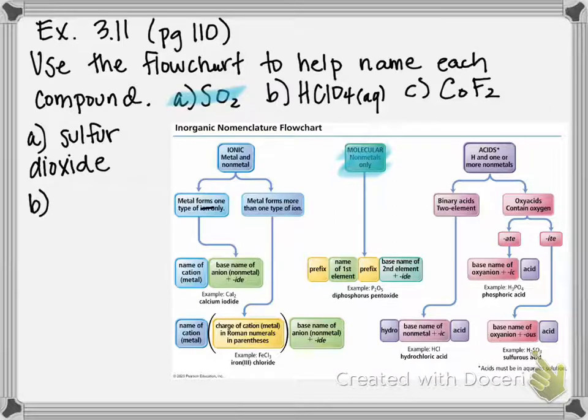All right, example B. Notice it's starting with an H and it's got a little aqueous next to it, so we should be able to recognize that as an acid, and not just any acid, it's not binary, it's an oxyacid. If you don't know what polyatomic ion this is, ClO4 is the perchlorate ion.